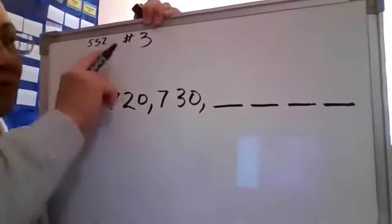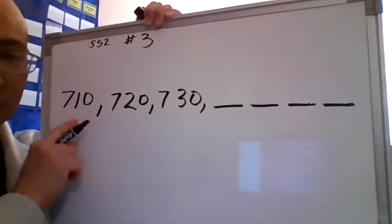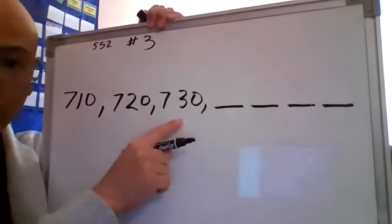Check, check. Page 552, number three. Bill is counting, and Bill has the numbers 710, 720, and 730.